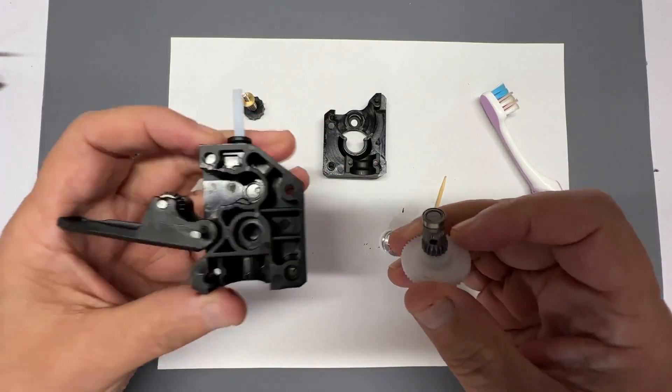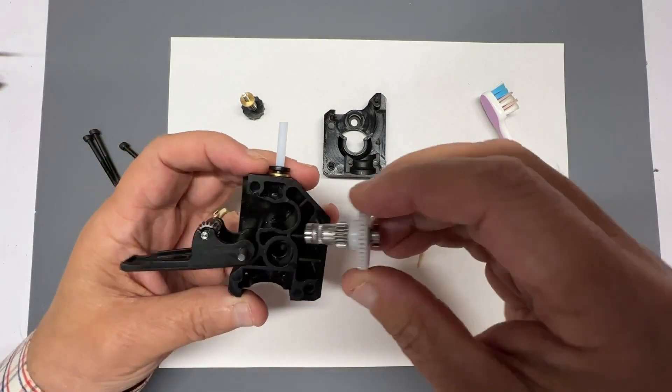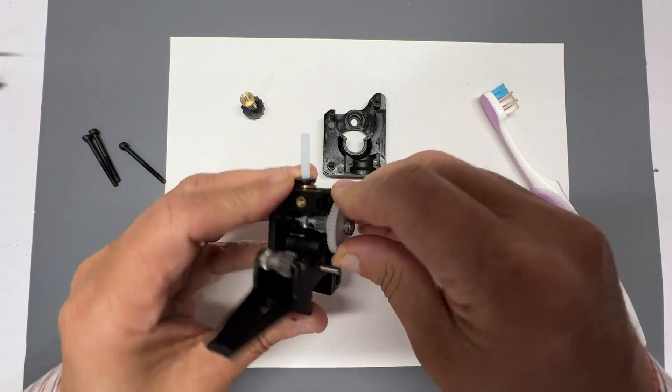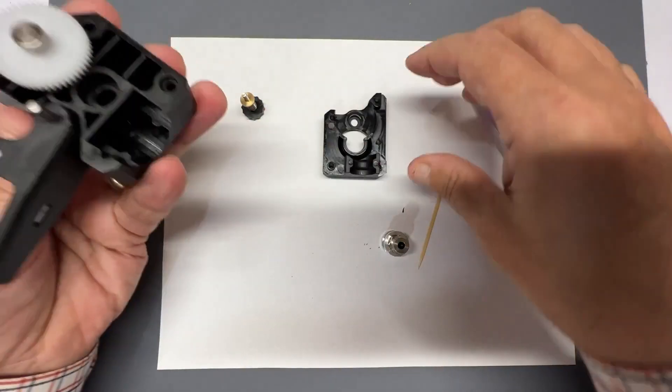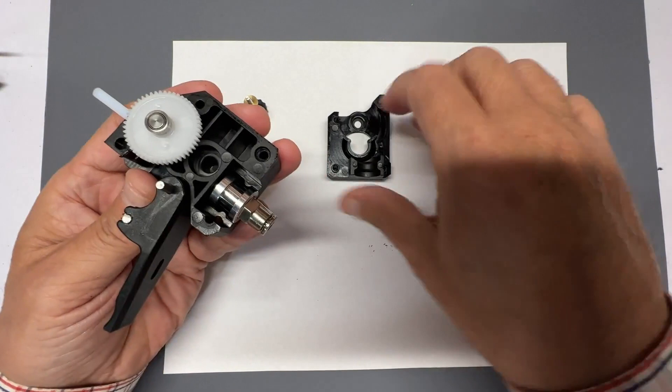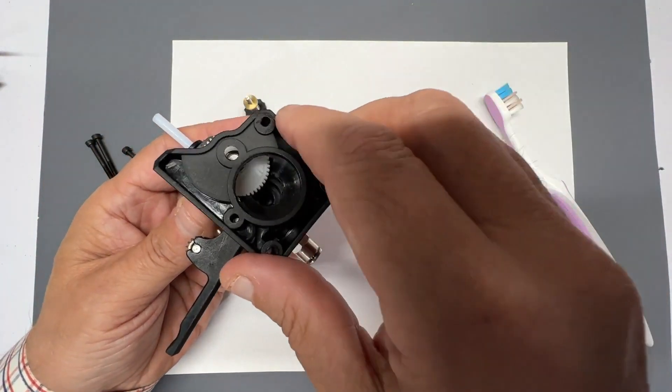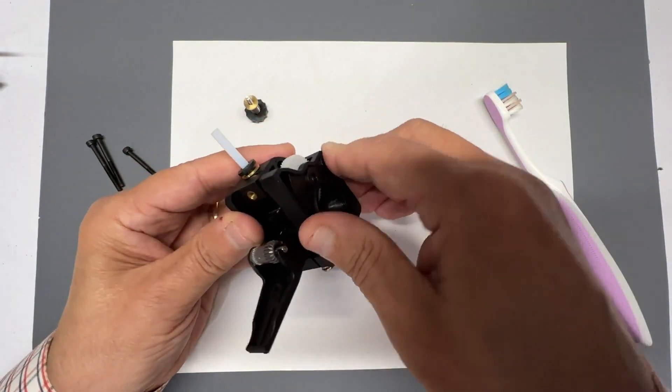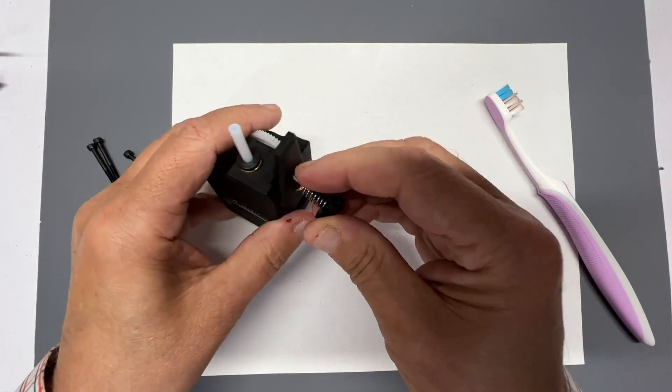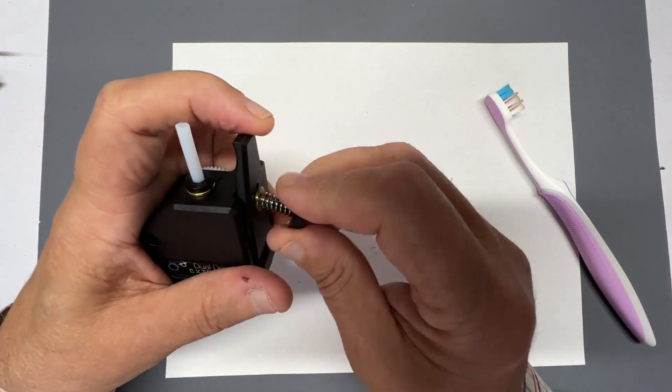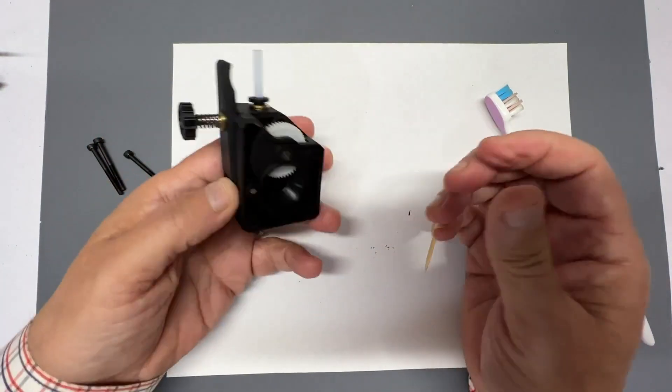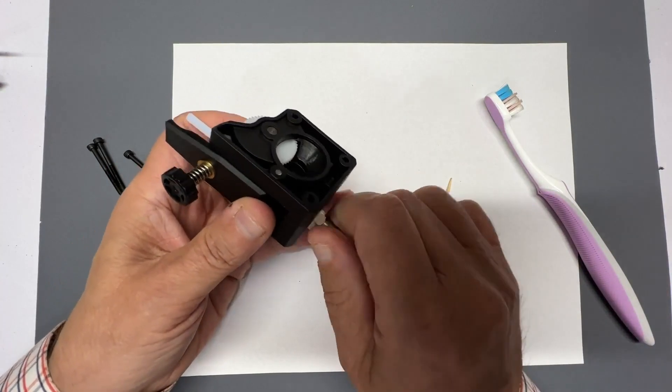Then we go ahead, put it back in this area here. Put this in there like that, like so. Then just put the top on. Put the thumb screw back in. There you have it. A working extruder and a clean extruder.